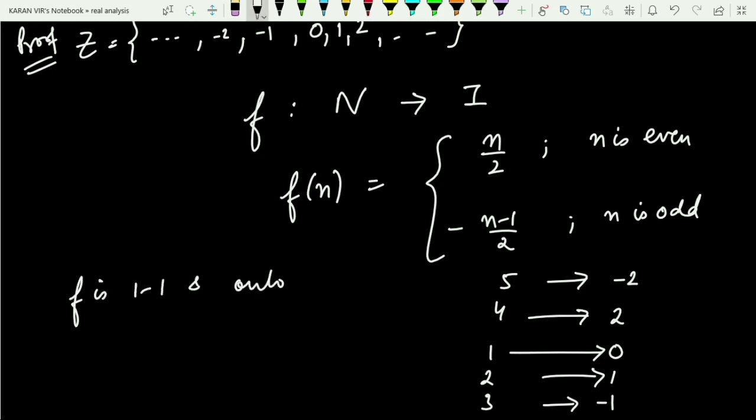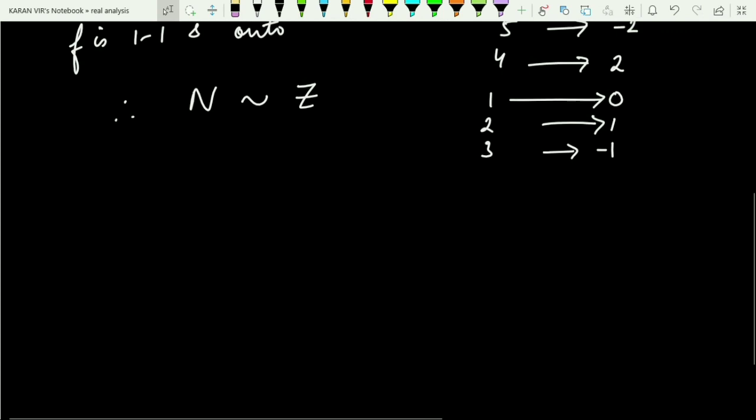Because the codomain equals the range, we can say that the set of naturals is equivalent to the set of integers (denoted as Z or I). If any set is equivalent to the set of naturals, we say that set is countable. Hence, we prove that the set of integers is countable, and that completes the proof.